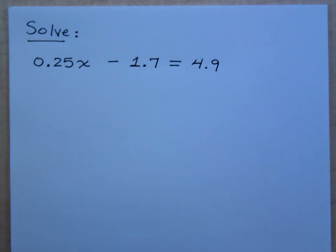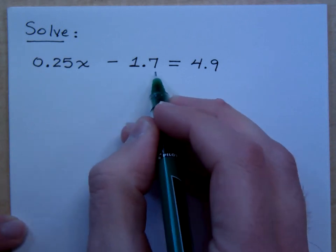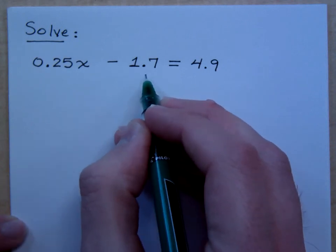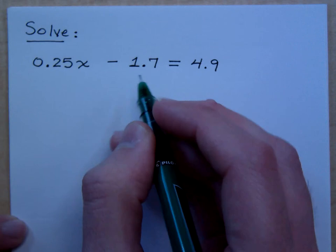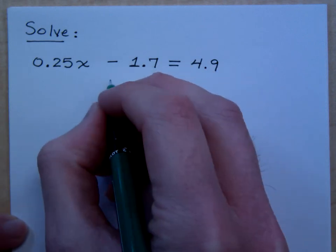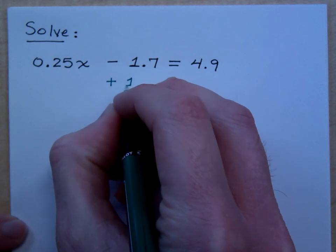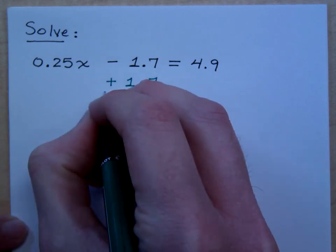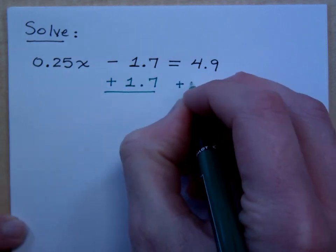How do you solve this? The first thing I need to do to start getting the variable by itself is to do what? I'm not going to do any division. Division is always your last step. Get rid of anything that is not attached to the variable. So I need to get rid of the minus 1.7. How do I get rid of that? I add it so that it cancels out. So add the 1.7.